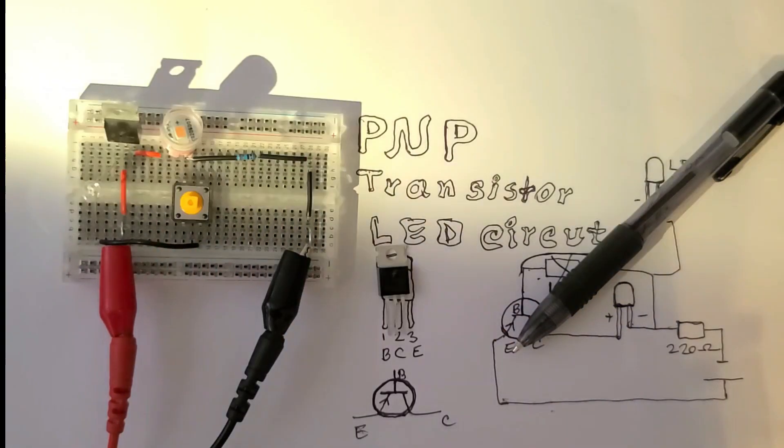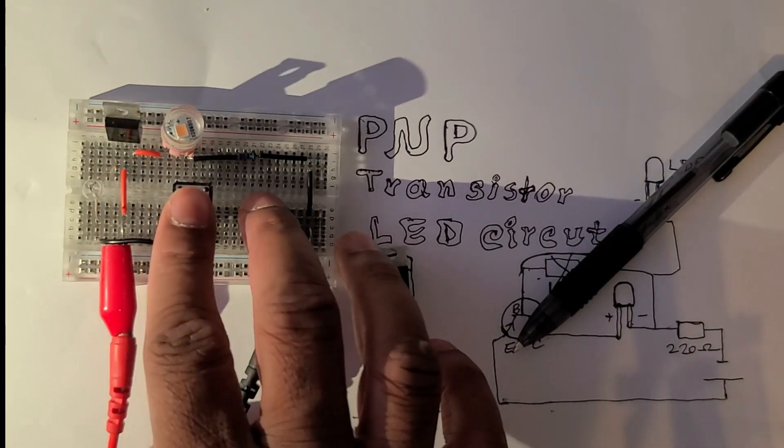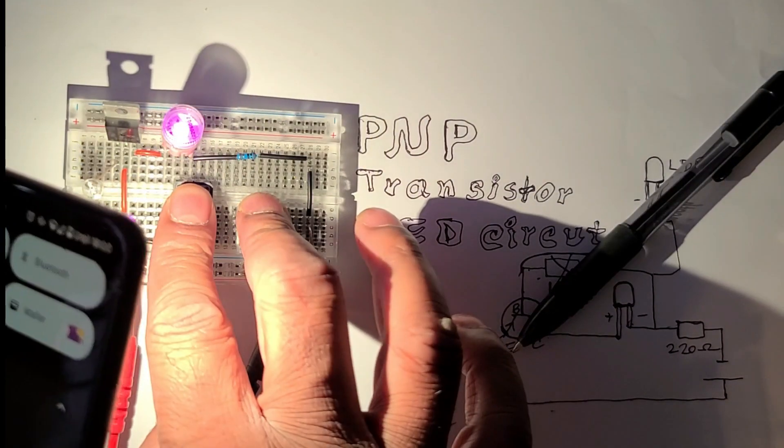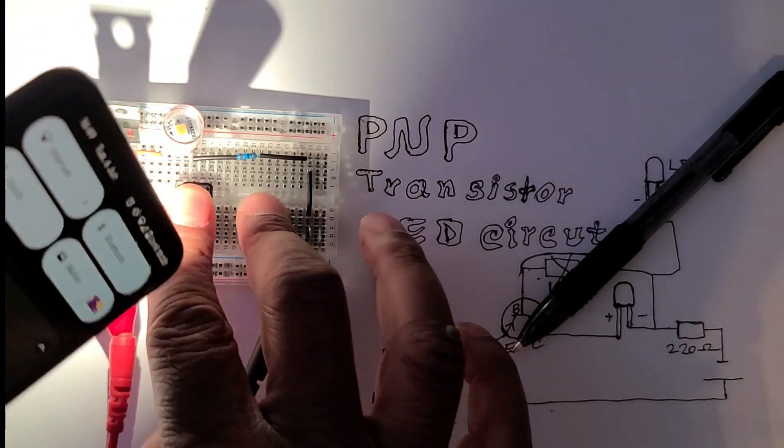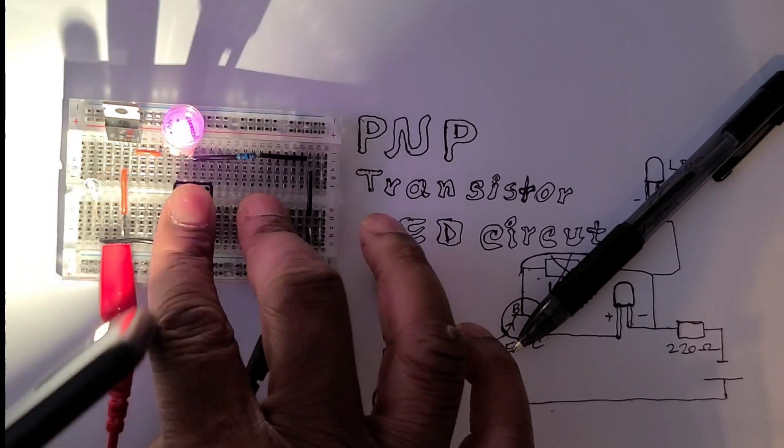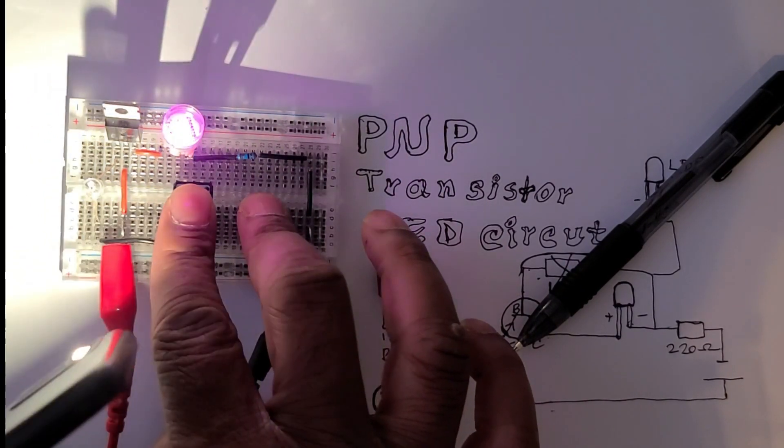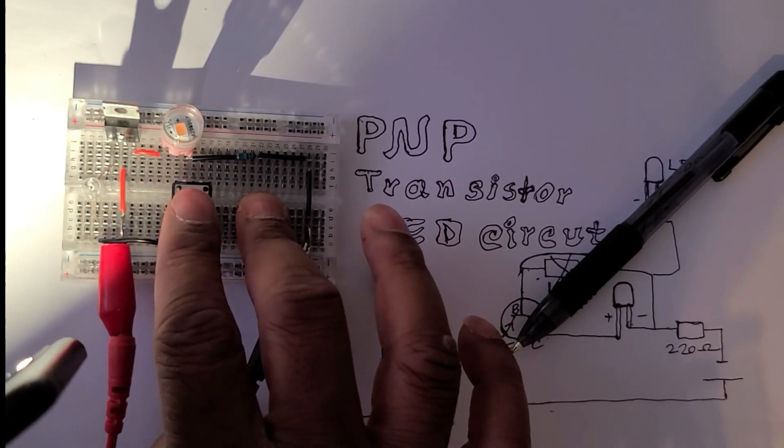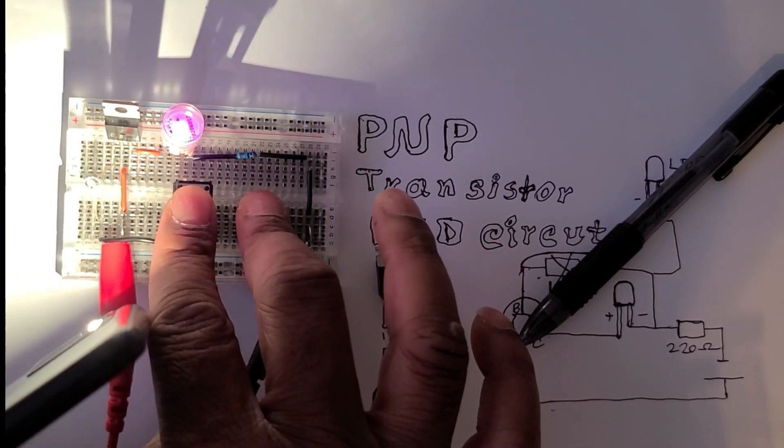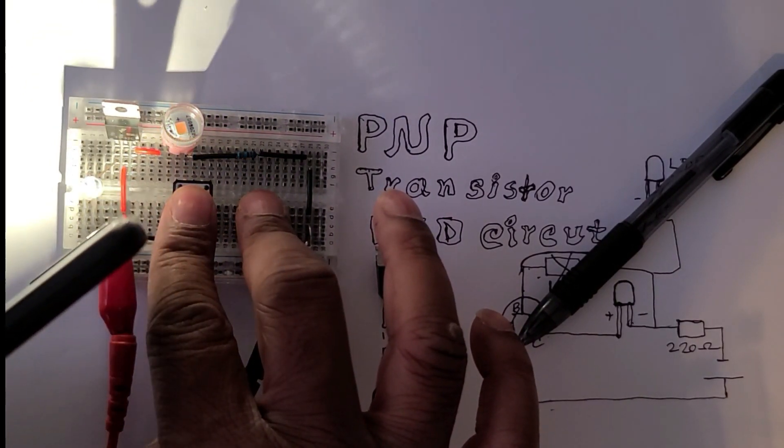But now it is sensitive to light. As you can see, I will shine the light and the LED will illuminate. I am shining the light to this LDR and this LED is illuminating, reacting to the light.